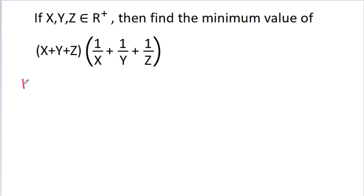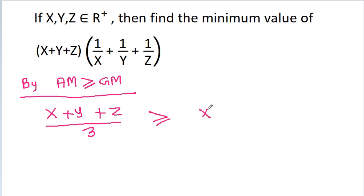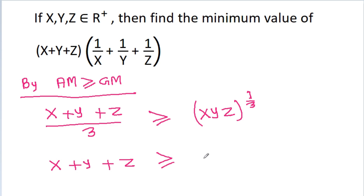By AM-GM, (x + y + z)/3 is greater than or equal to (xyz)^(1/3), and therefore x + y + z is greater than or equal to 3·(xyz)^(1/3). Suppose this is equation 1.